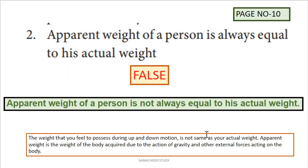Next question: 'Apparent weight of a person is always equal to his actual weight.' Apparent weight is the weight that you feel during up and down motion — for example, the lift problem. The body acquires weight due to gravity and other external forces, so apparent weight is not always equal to actual weight. This statement is false.